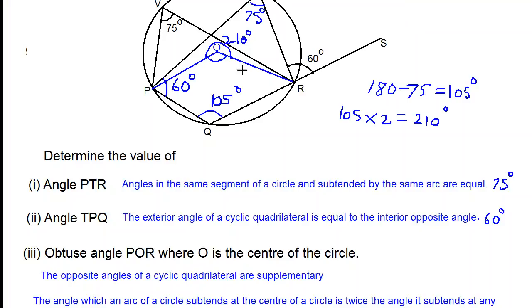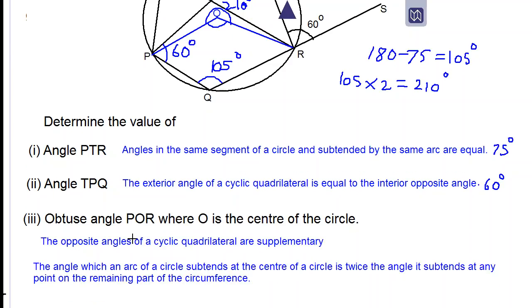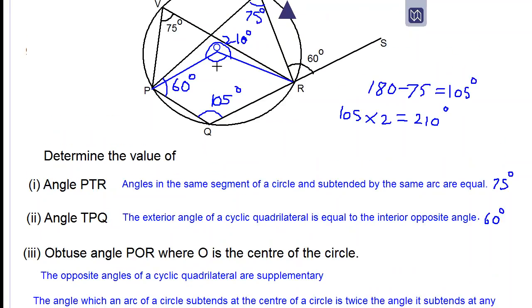But the question does not ask for a reflex angle. The question asks for an obtuse angle. So to find the wanted angle, what we do is subtract 210 from 360 and we get 150 degrees.